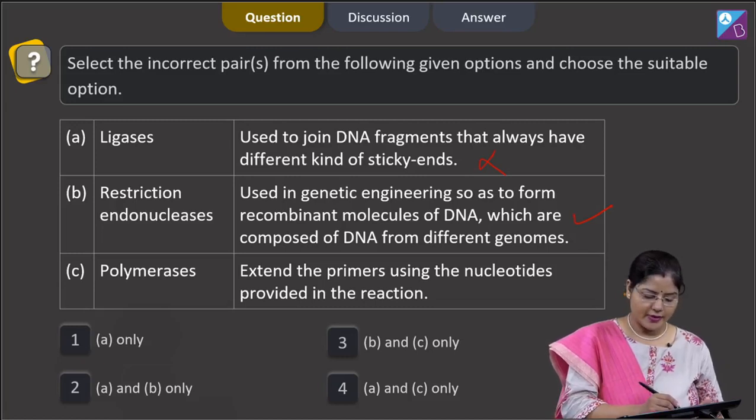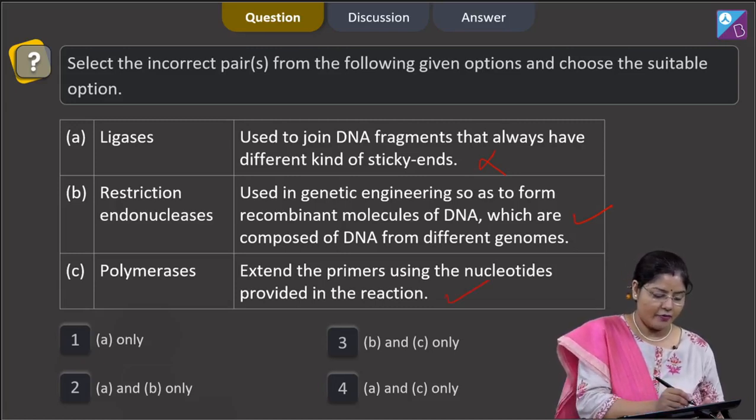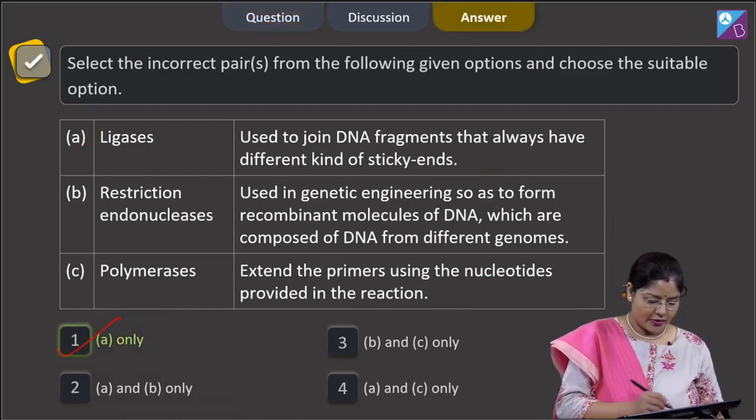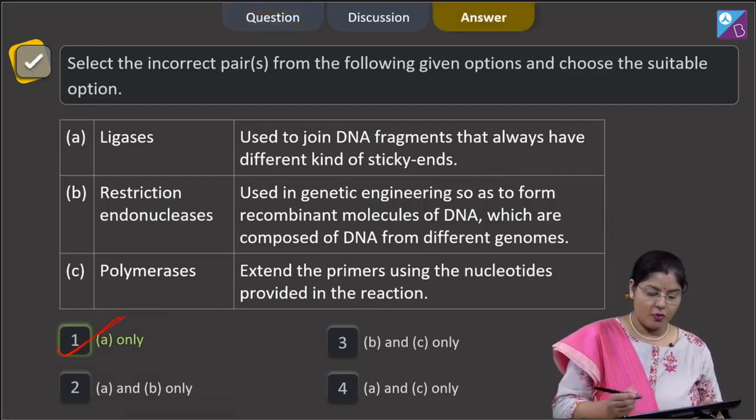C, polymerases extend the primers using the nucleotides provided in the reaction. This is also a correct match. As we have to choose the incorrect pair, the incorrect pair is only A. So the correct answer to this question is option number 1.